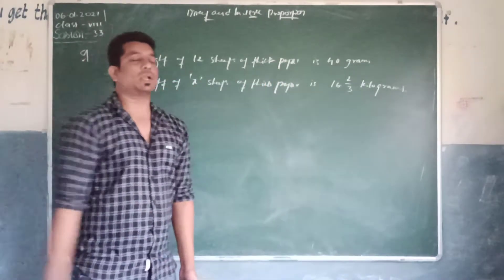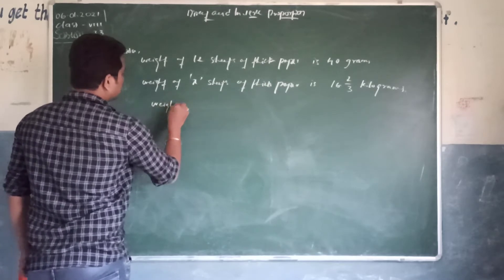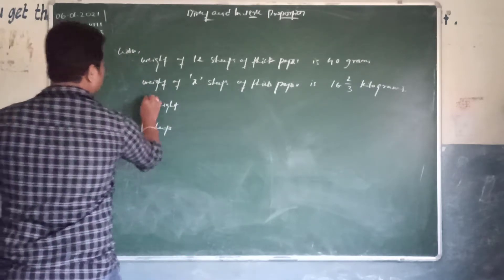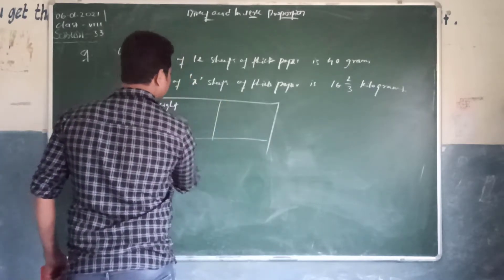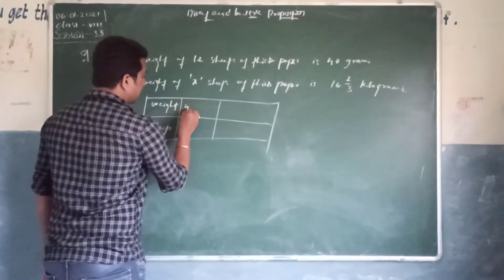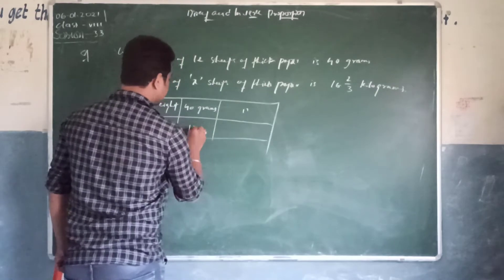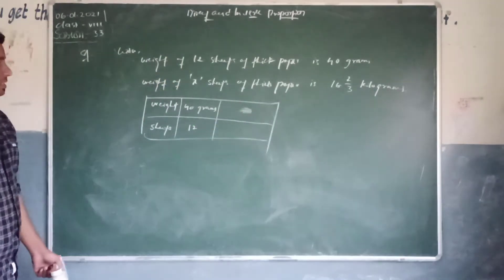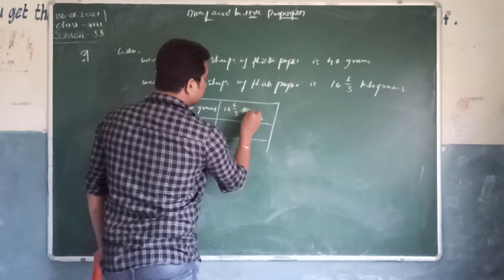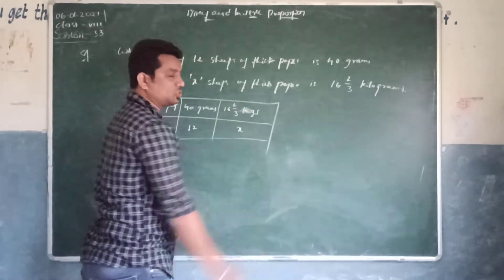We need to find out X, so let us write this in a tabular form. I am taking two columns: one is weight and the other is sheets. First, weight is 40 grams and 12 sheets. Then 16 and 2/3 kilograms and X sheets, since we don't know we attribute it as X.